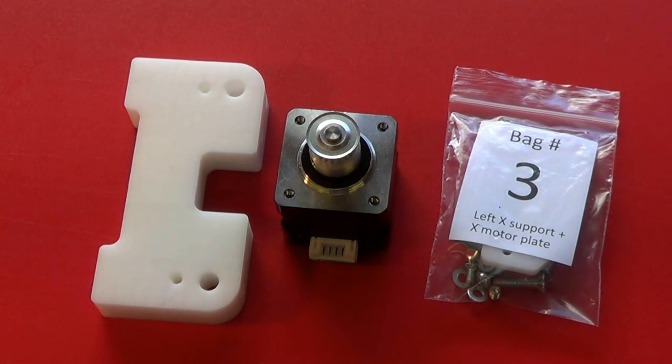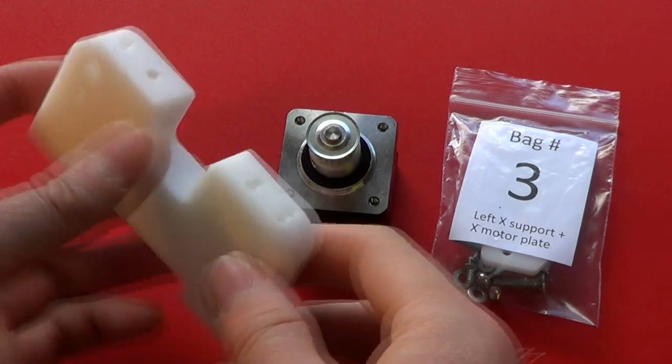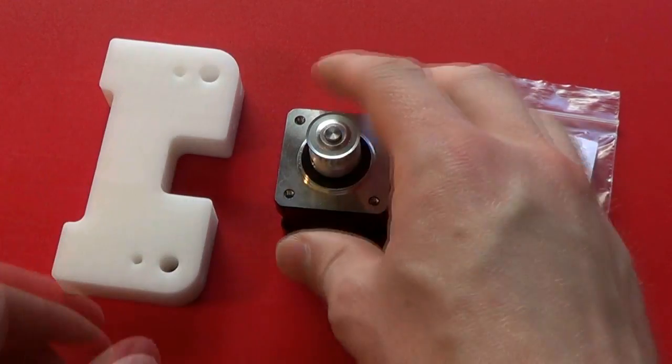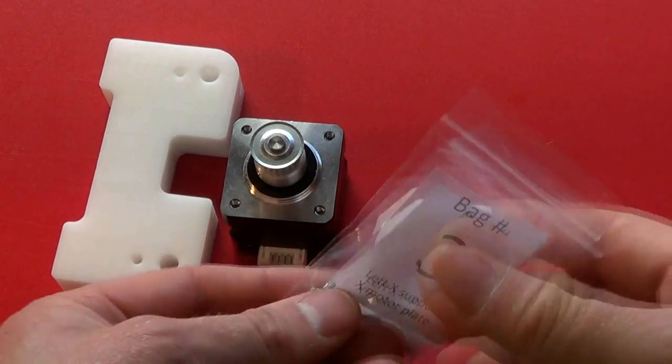We're now going to assemble the left hand X support and the X motor mount. Take one of the X support pieces, one of the stepper motors, and bag three which has all of the mounting hardware.